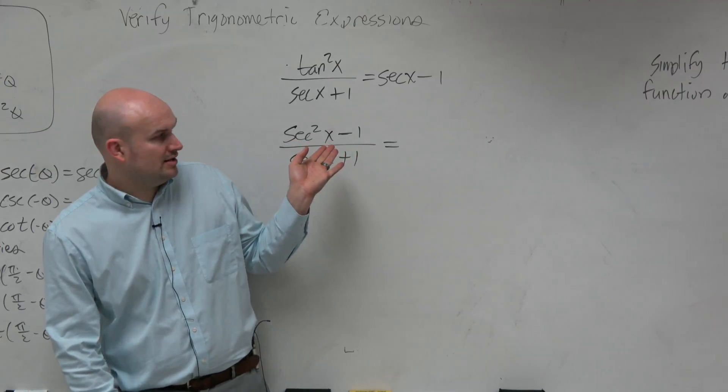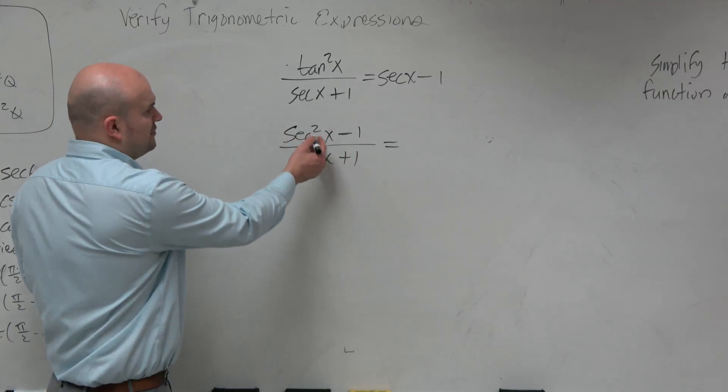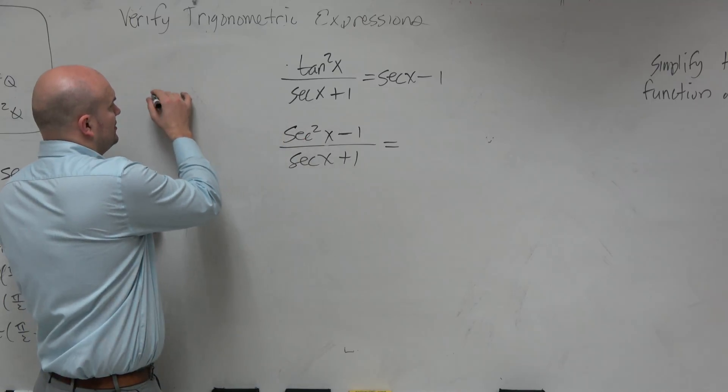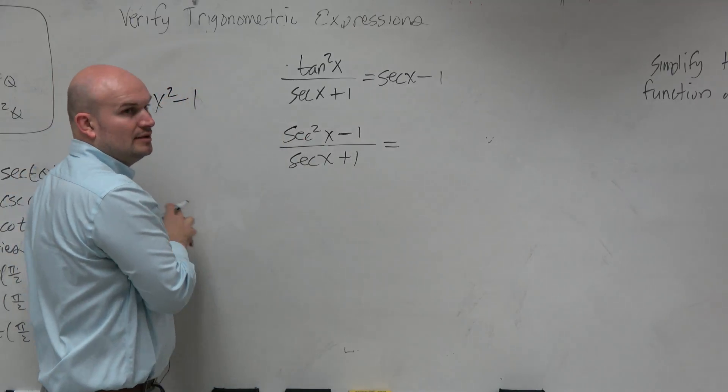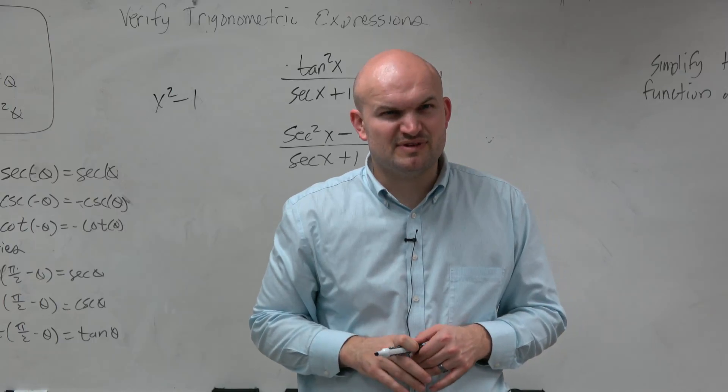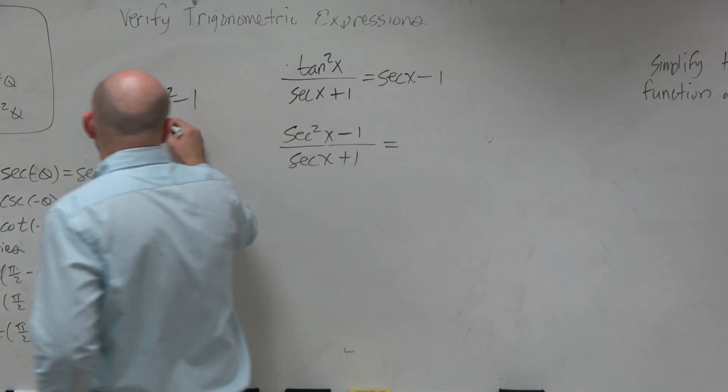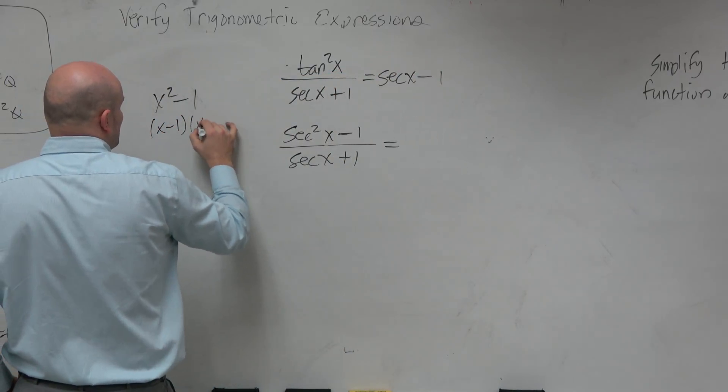Now, there's something also I notice here. This is in the form of x squared minus 1. If you replace secant with x, it would look like this, x squared minus 1. Now, is there something I can do with x squared minus 1 that we've done before? You could factor it into x minus 1 times x plus 1.